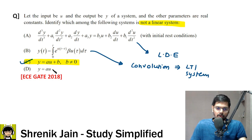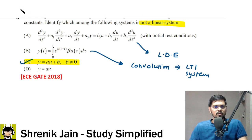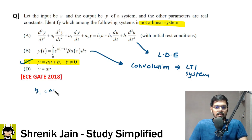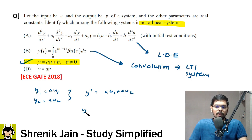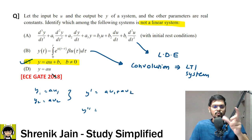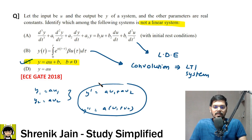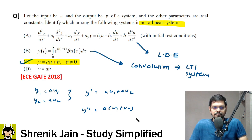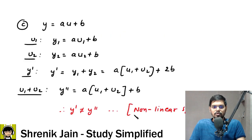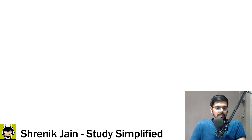For option D, y = Au: Y1 = Au1 and Y2 = Au2. Their sum Y' = A(u1 + u2). When input is u1 + u2, output is also A(u1 + u2). Both are the same, so option D is a linear system. Therefore, the nonlinear system is option C.